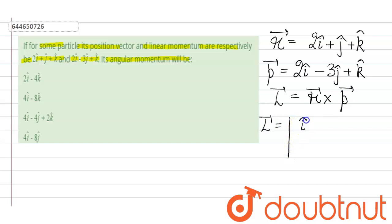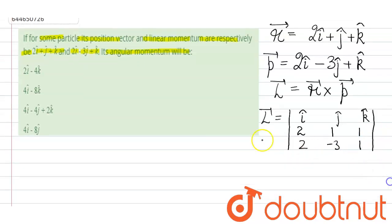That is put i cap here, put j cap here and put k cap here. Writing the coefficient of r: 2, 1, 1; and 2, minus 3, 1. Now we do the cross product. First we hide the ith column, so we write here i cap.